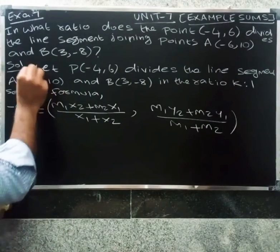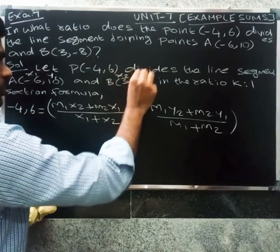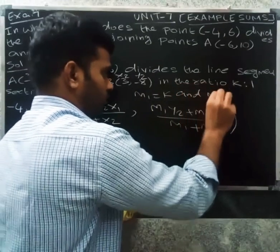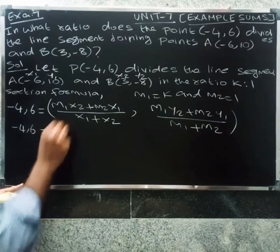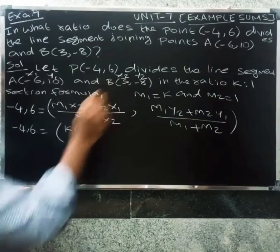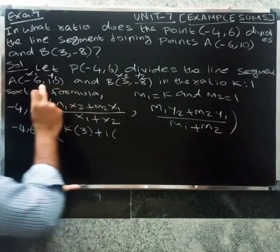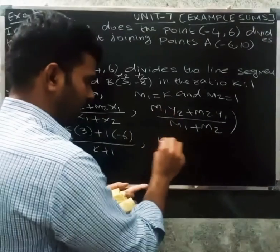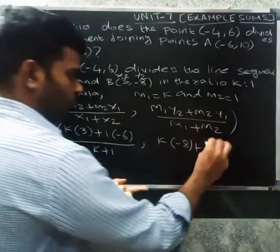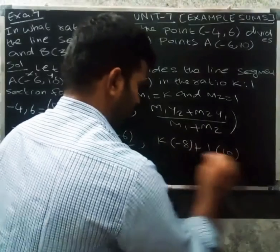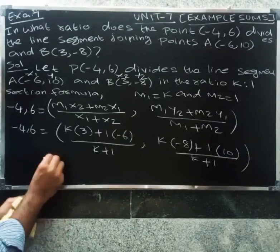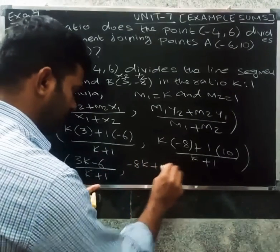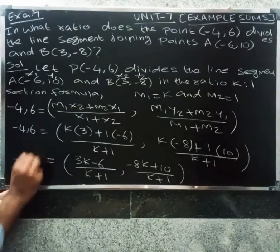Substituting x1, y1, x2, y2: x1 = -6, y1 = 10, x2 = 3, y2 = -8. And m1 = k, m2 = 1. So the point equals (3k - 6) / (k + 1) for x-coordinate, and (-8k + 10) / (k + 1) for y-coordinate. Point P is (-4, 6).